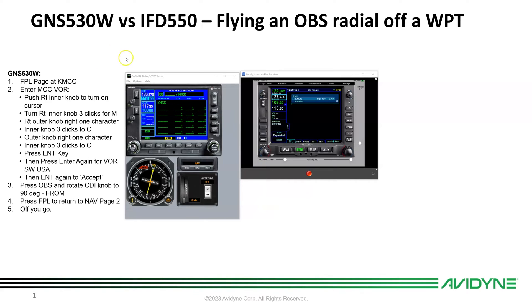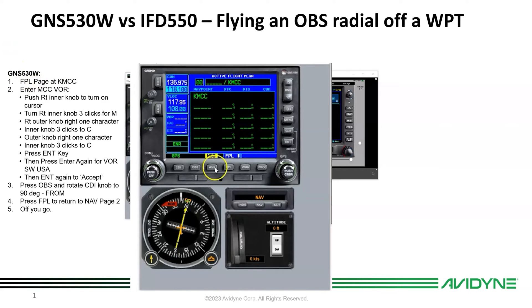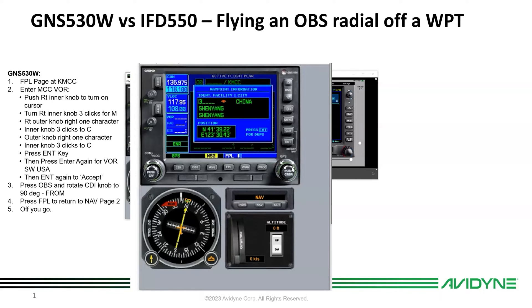To make that happen, we start up the simulator. Starting with the 530, we're on the flight plan page and MCC is my origin airport, so that's already set up. First thing I need to do is enter the VOR for MCC, so I'm going to push the right inner knob to turn on the cursor. I'll turn the knob three clicks to get K, L, M, then move the cursor over with the big knob and the small knob to get to C.